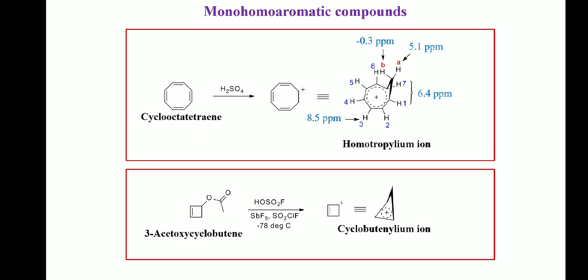The cyclooctatrienyl cation, also called the homo tropylium ion, is an example of a mono homoaromatic compound. The homo tropylium ion can be formed by dissolving cyclooctatetraene in concentrated H2SO4. An aromatic sextet is spread over seven carbon atoms as in the tropylium ion. In order for the orbitals to overlap most efficiently to close a loop, the sp3 carbon is forced to lie almost vertically above the plane of the sp2 atoms.